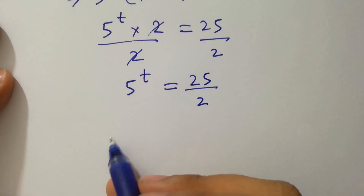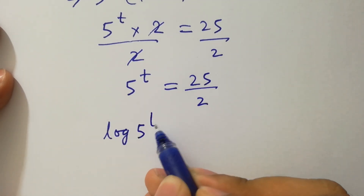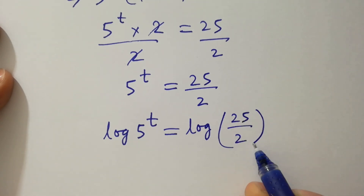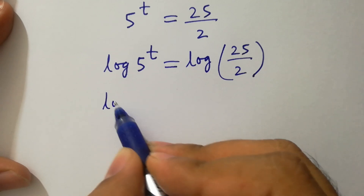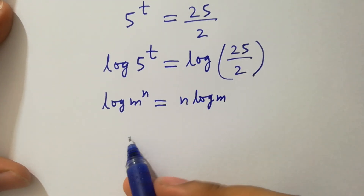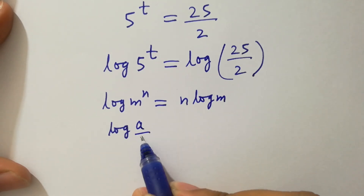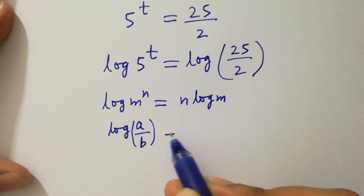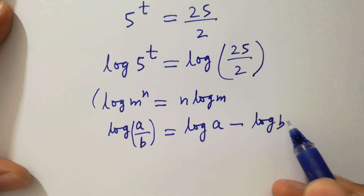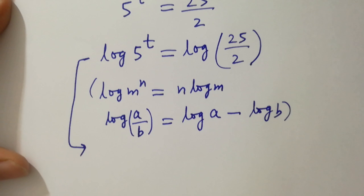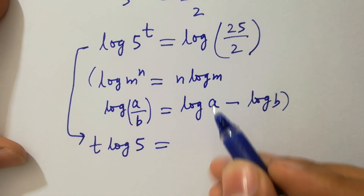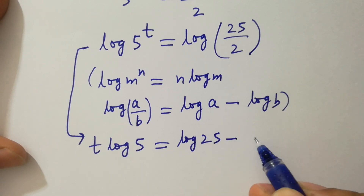Take log on both sides: log of 5 to the power t equals log of (25 over 2). Since log m to the power n equals n log m, and log (a over b) equals log a minus log b, it becomes t log 5 equal to log 25 minus log 2.